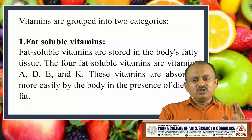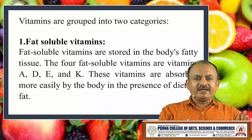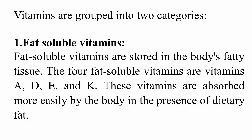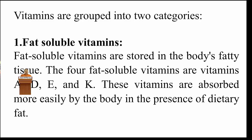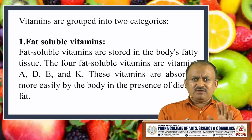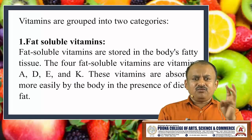Vitamins are grouped into two categories. The first category is fat soluble vitamins, which are stored in the body's fatty tissues. The four fat soluble vitamins are vitamin A, D, E and K. These vitamins are absorbed more easily by the body in the presence of dietary fat. When we take our diet, we consume various sources of food: carbohydrates, proteins, fat, vitamins and minerals.